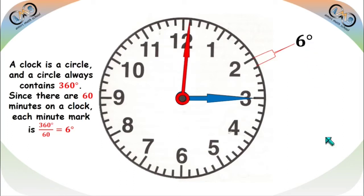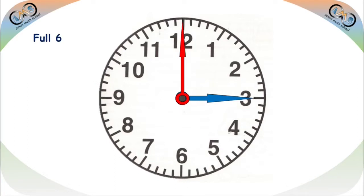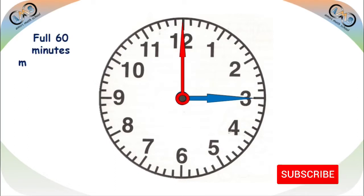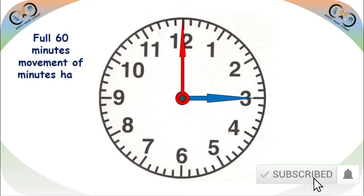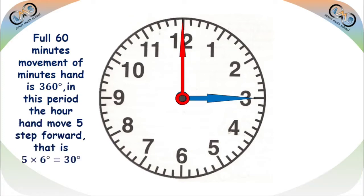Let's see the minute movement. For each minute — 1, 2, 3, 4, 5 — the angular movement at the center for the hand is 6 degrees. The full 60-minute movement of the minute hand is 360 degrees. In this period, the hour hand moves five steps forward, that is 5 times 6, which is 30 degrees.